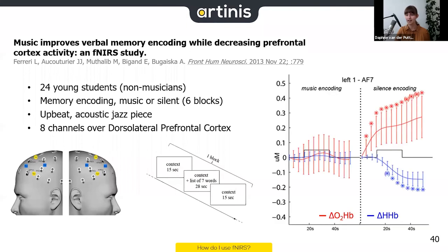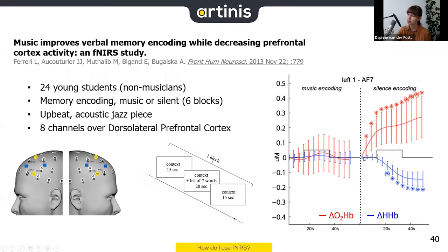Afterwards, participants recalled the words during a retrieval phase. The results: during music encoding, the prefrontal cortex showed little activity, while during silence encoding there was a big increase in oxyhemoglobin and a slight decrease in deoxyhemoglobin — clear prefrontal activity. Interestingly, memory encoding was better during music — more words remembered — suggesting music may reduce effort while improving memory.